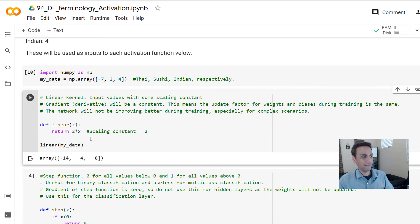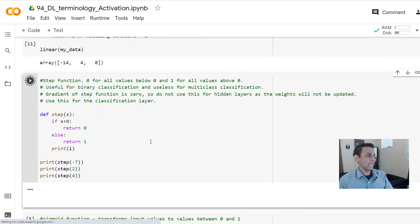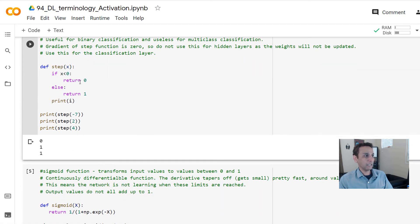So let's go ahead and import our array and you can see linear is basically minus seven, two, four. And in this case, I have a constant of two. So we are just multiplying each by two. Linear. This is a linear function. So you get minus 14, four, and eight here. Now, if you look at the step function, let's go ahead and run this. Anything below zero, return a zero. Anything above zero, return a one. So obviously zero, one, one. This is how we ended up with zero, one, one earlier.